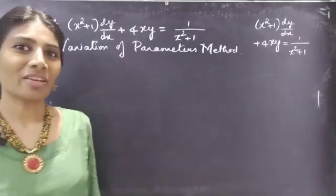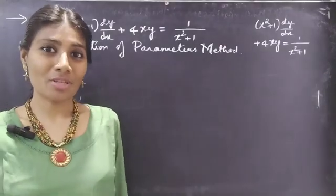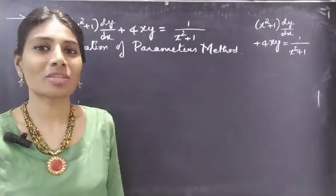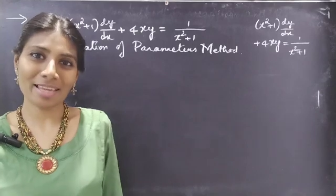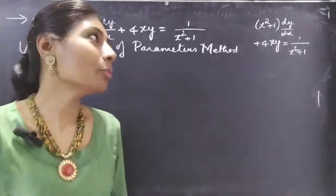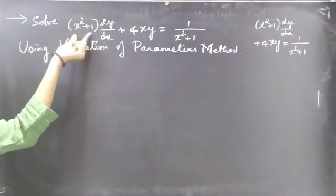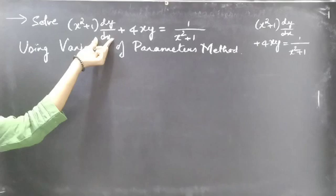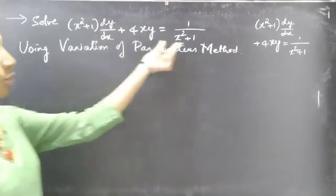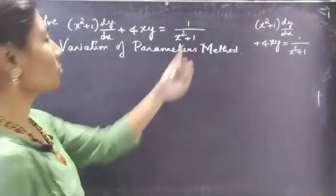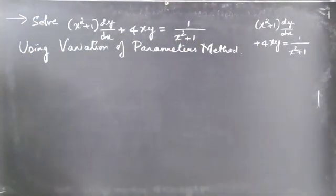Hello everyone, this is Zia Kalitna. In this video we are going to solve a differential equation using the variation of parameters method. The problem: solve (x² + 1) dy/dx + 4xy = 1/(x² + 1) using variation of parameters method.